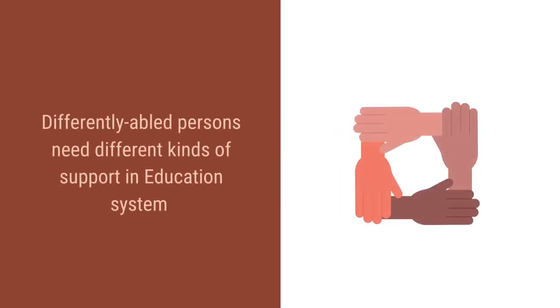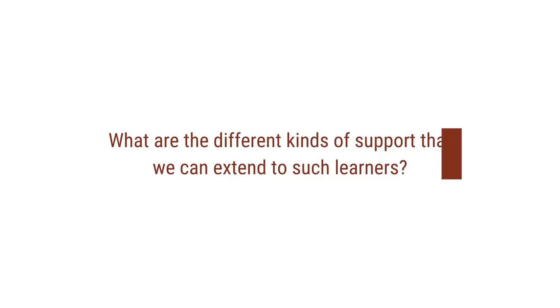Every education system is mainly designed for people without disabilities — the normal people. So when differently abled people, people with disabilities, get into an education system, they need different kinds of support. In this video, we shall be talking about the different kinds of support that such learners need during their study in a university.